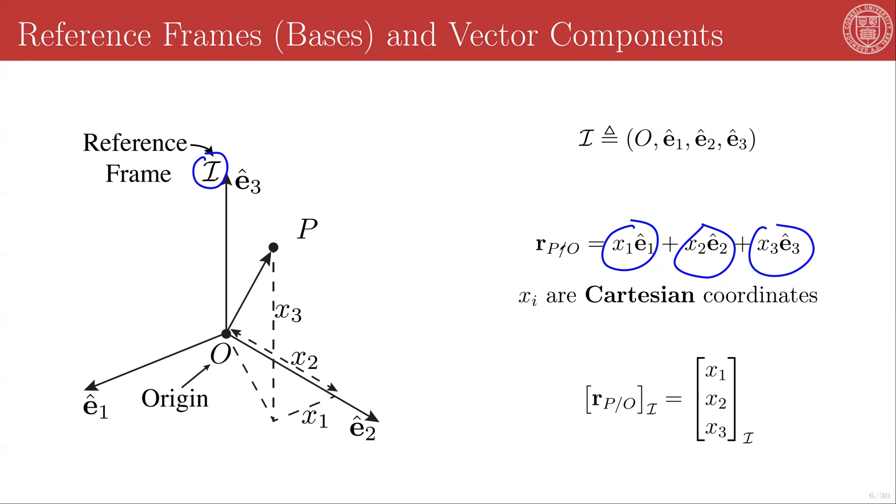So again, I have a vector pointing from O to P. That vector is a completely frame independent quantity. It is just a geometric blob having a magnitude and direction. I can then define a reference frame that has three unit directions, e_1, e_2, e_3 hat. These are unit directions.